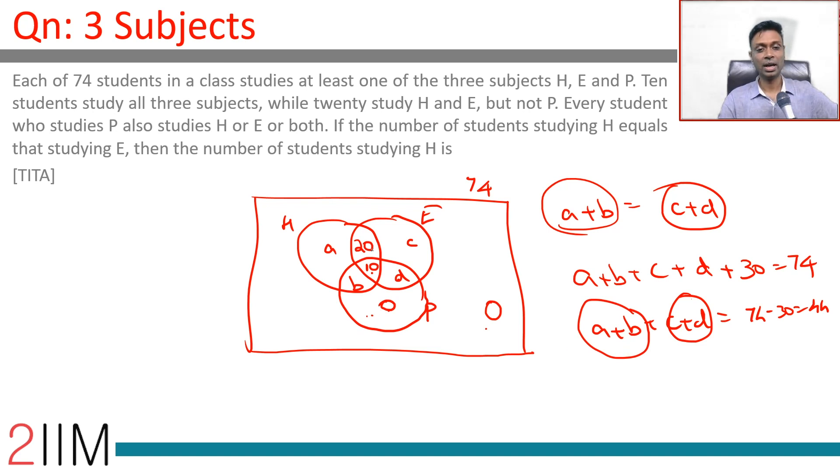Outside is 0. Number of people studying H is equal to number of people studying E. These are common. It means people who miss out A plus B should be equal to C plus D. These two are common. So people who study H but not E should be equal to people who study E but not H. Which is why we have this equation.